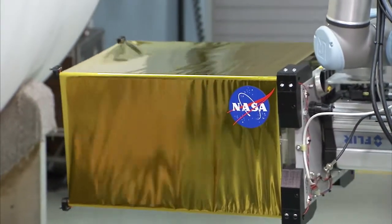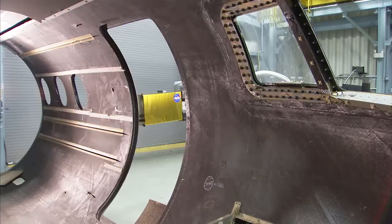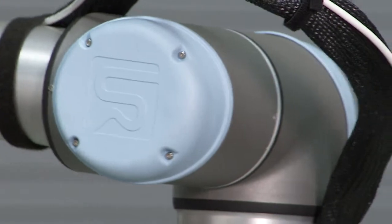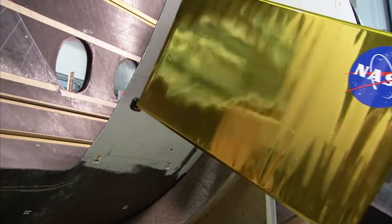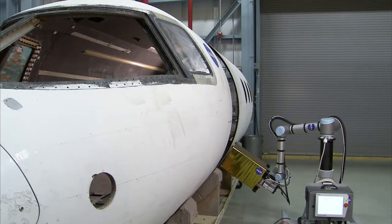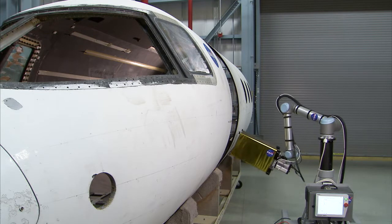The robot will move the inspection head to each location that's been programmed in. It will stop there and it's got sensors that allow it to make sure that it doesn't impact the surface of the vehicle. It can move to an exact location and then it can hold it there indefinitely.